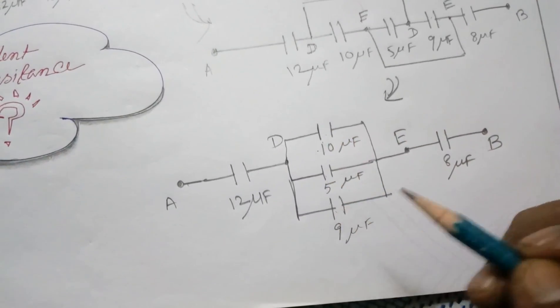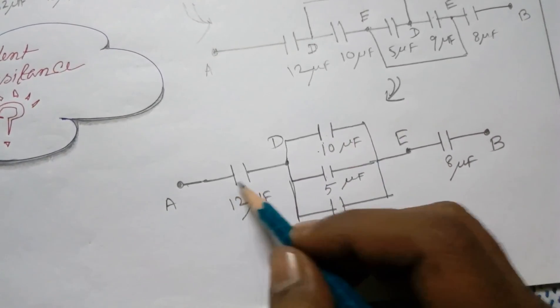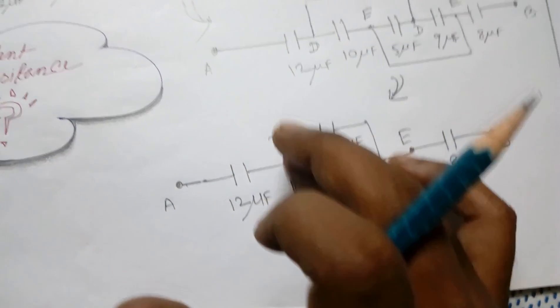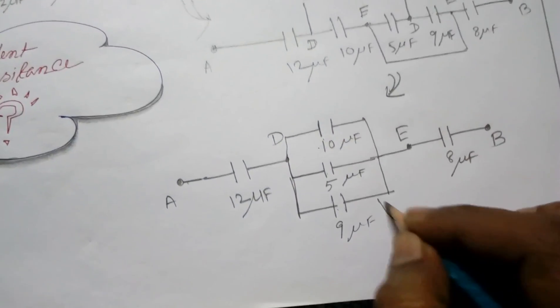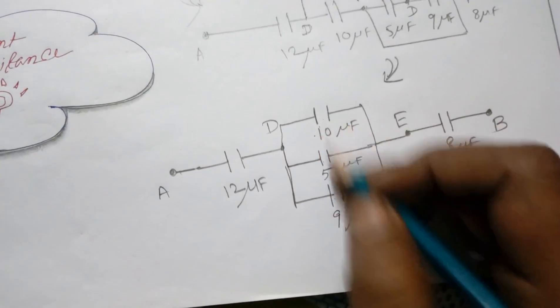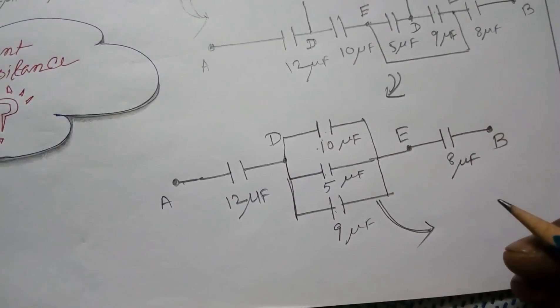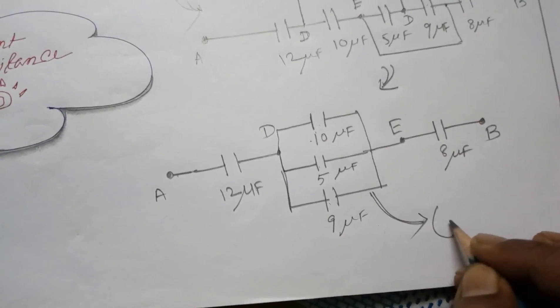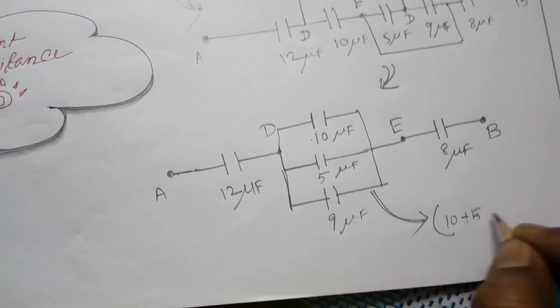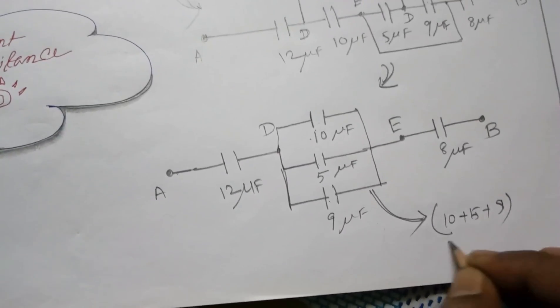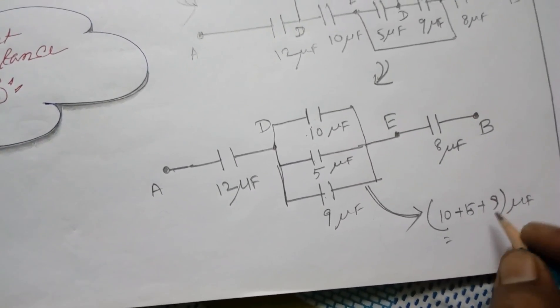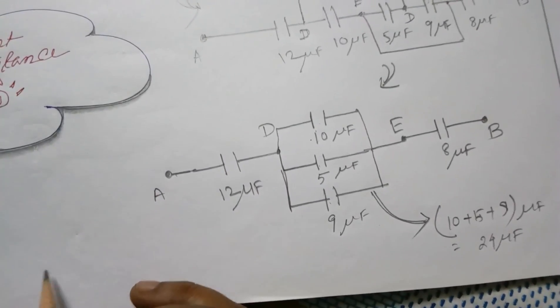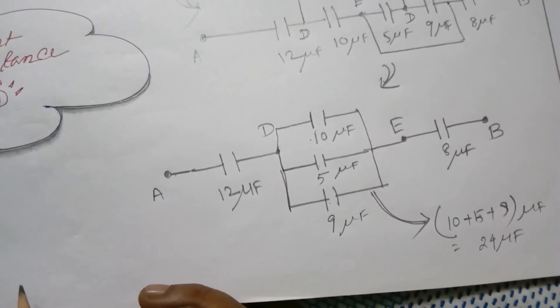Now you can see that these three capacitors are connected in parallel. These two capacitors are in series with that one. So you can find out the equivalent capacitance of that port. The equivalent capacitance of these will be - just simply you have to add them because they are connected in parallel. So that will be 10 plus 5 plus 9, that will give you 24 microfarad.